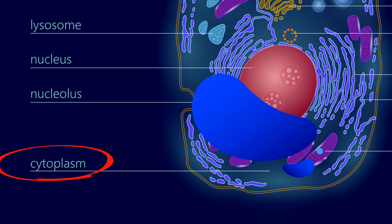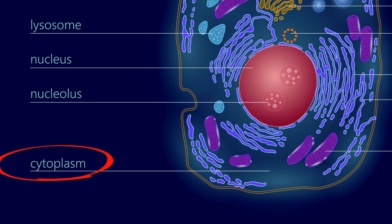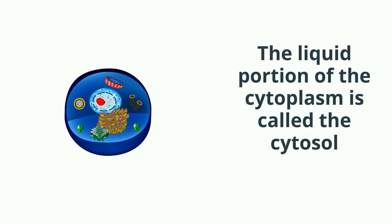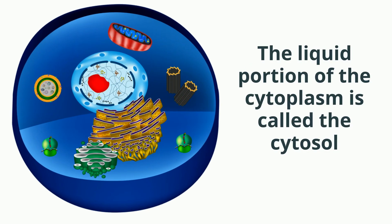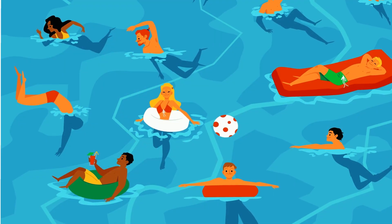The organelles are found floating in this liquid along with many other items. In fact, you can almost think of the cytoplasm as a crowded swimming pool.